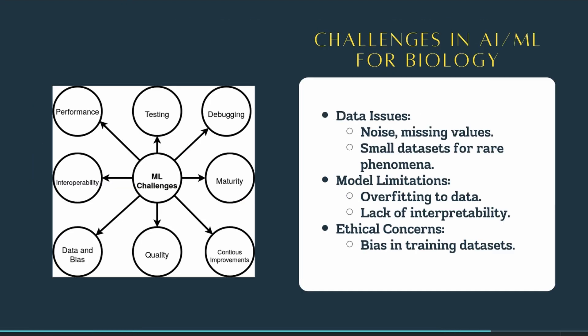Despite all the advantages and applications, AI and ML also come with challenges when applied to biological research. One issue is data quality — biological data can be noisy, incomplete, or biased. Small datasets, especially for rare conditions or phenomena, are also a challenge, and gathering data in some conditions can be very difficult or costly.